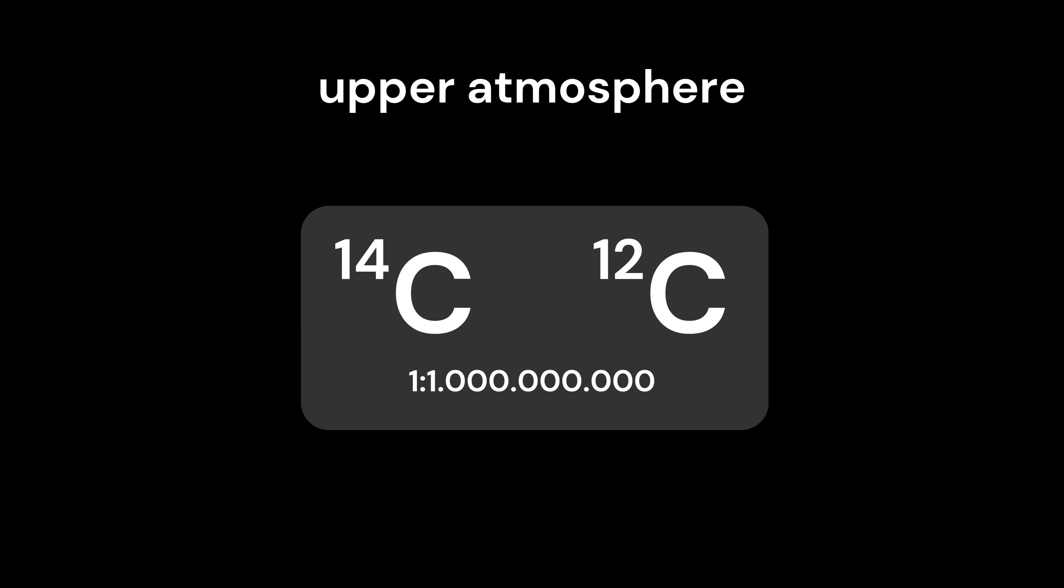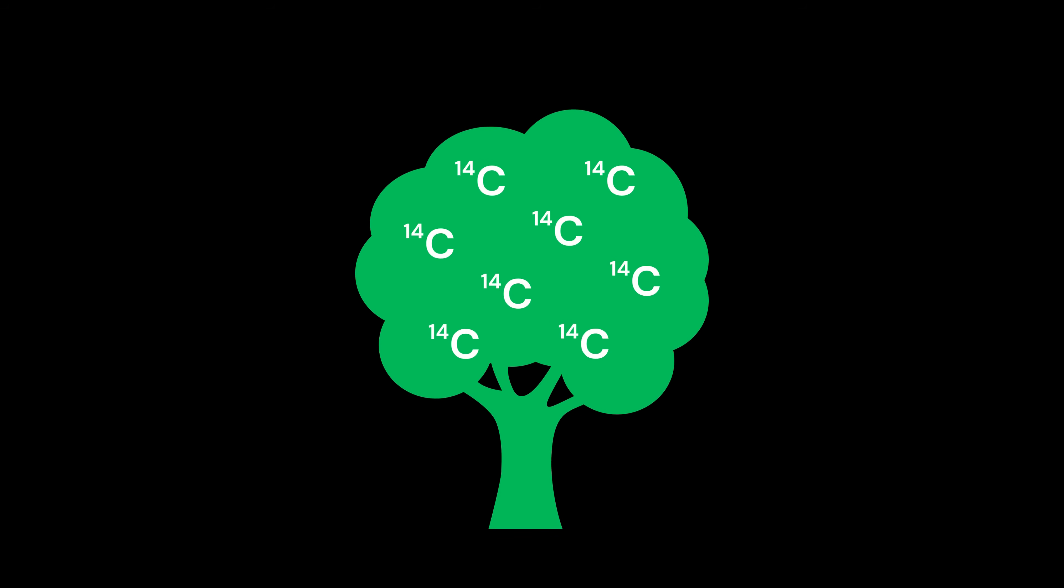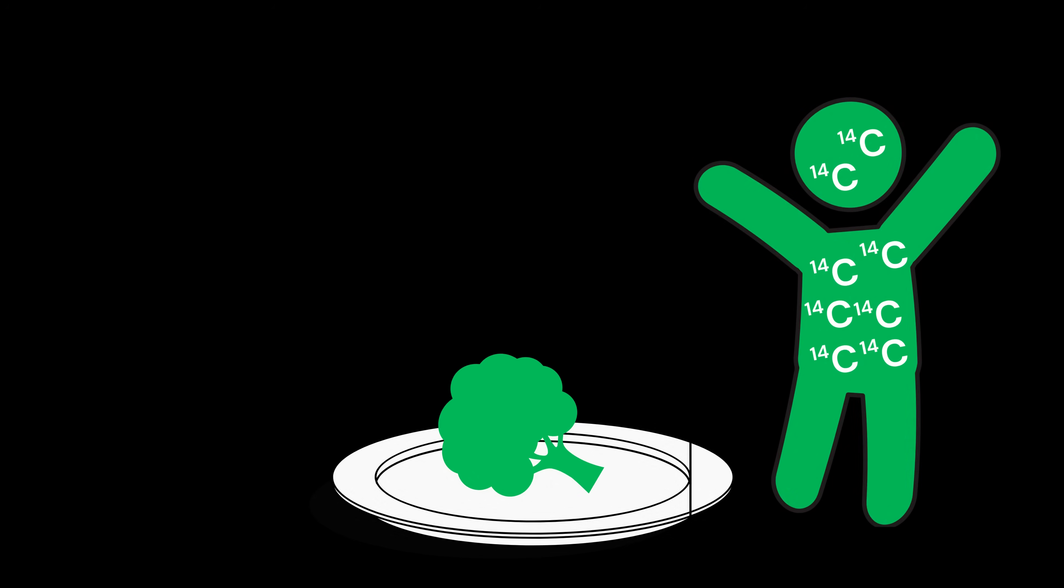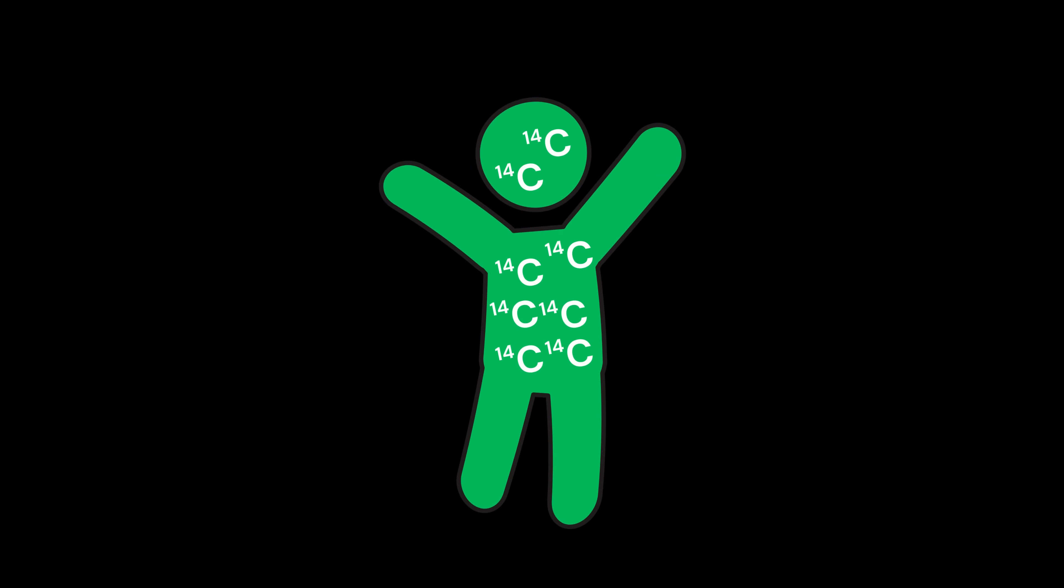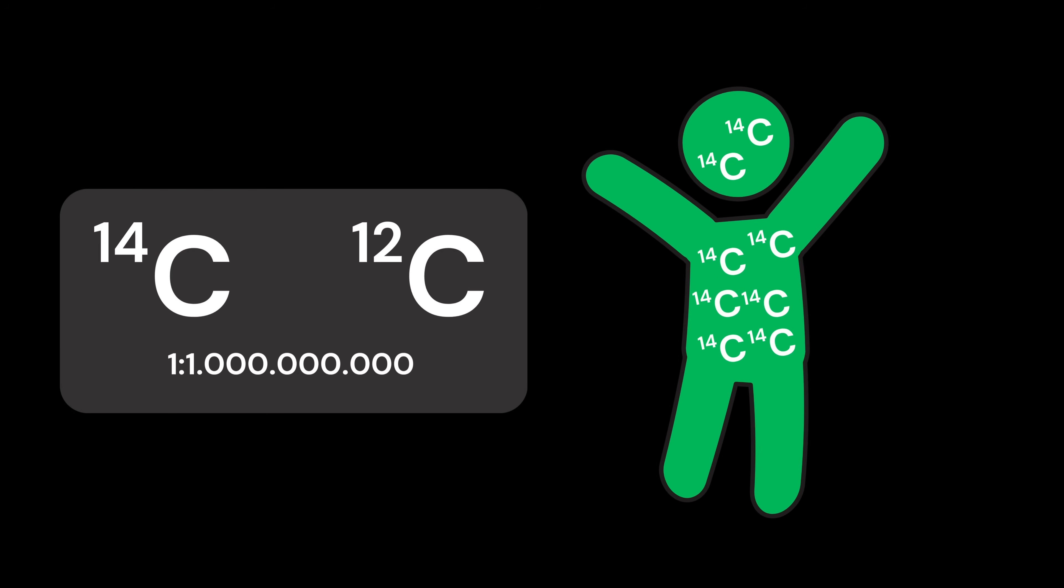The carbon, including C14, then enters plants via carbon dioxide. The plants are then eaten by living organisms. Thus, C14 also enters living organisms and accumulates there in the same ratio as in the atmosphere.